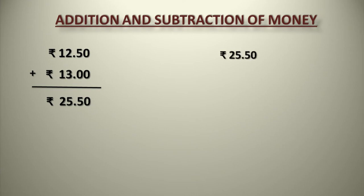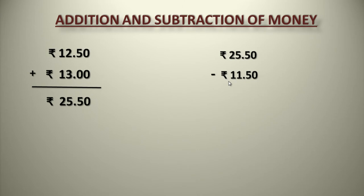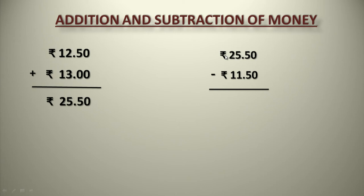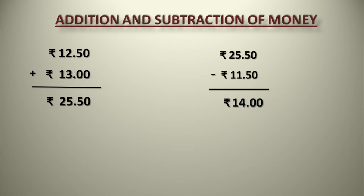Now subtraction. If you have to subtract, write down the amounts: 25 rupees 50 paisa minus 11 rupees 50 paisa. First subtract the paisa: 50 paisa minus 50 paisa is 00. Then subtract the rupees: 25 minus 11 is 14. So the answer is 14 rupees. By subtracting 11 rupees 50 paisa from 25 rupees 50 paisa, we get rupees 14.